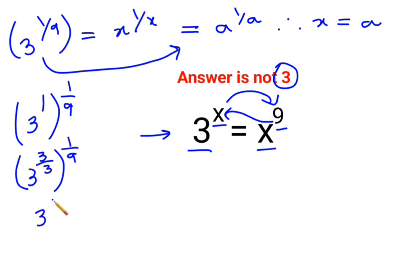Which can be written as 3 raised to 3, multiplied by 1 upon 3, the whole raised to 1 upon 9.